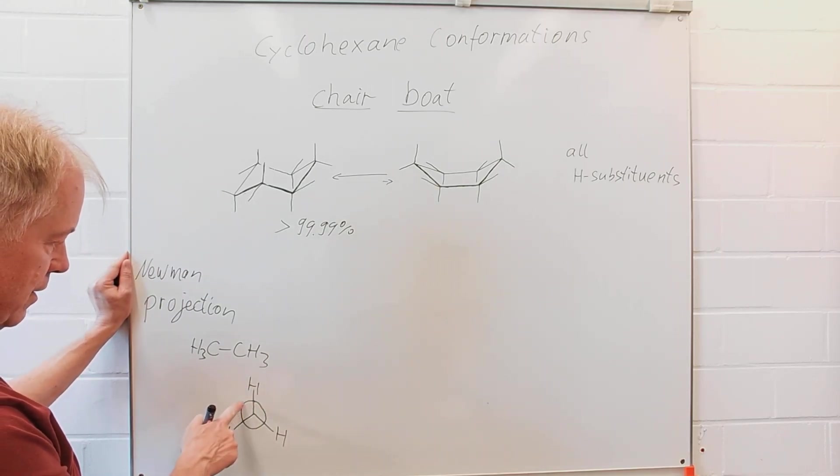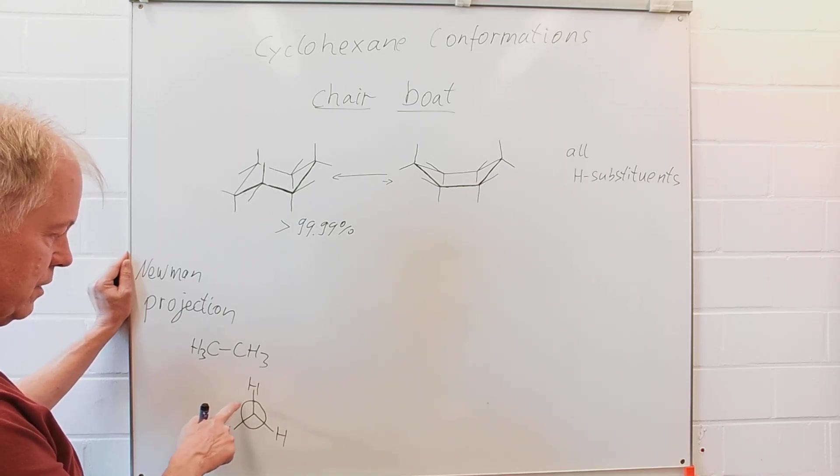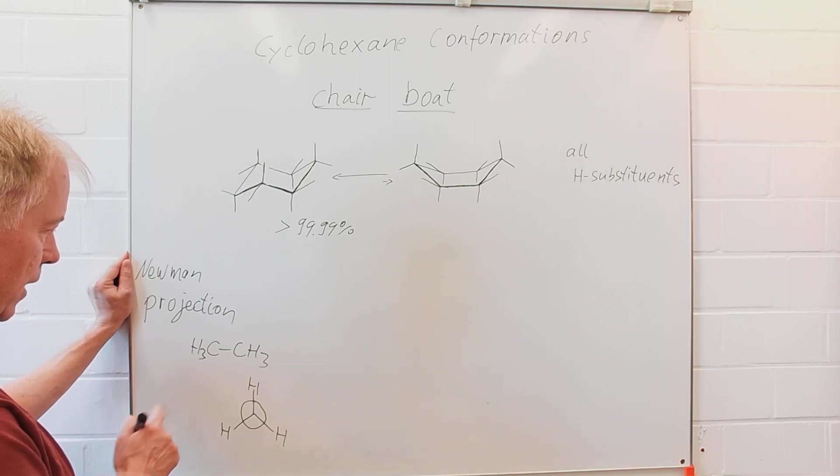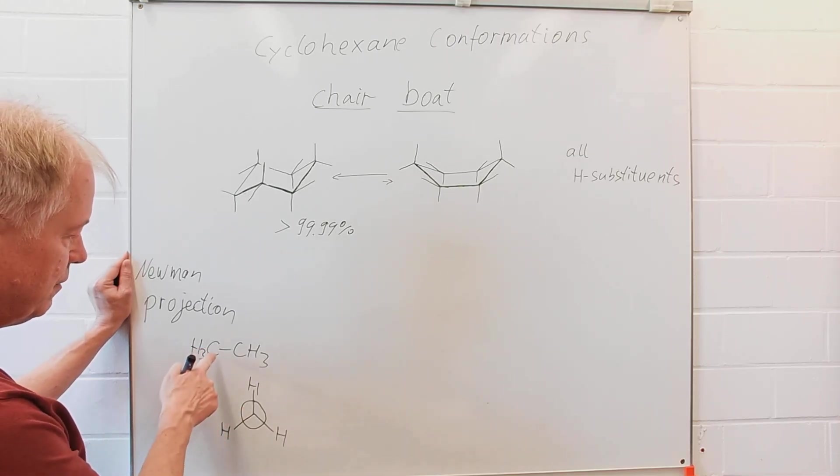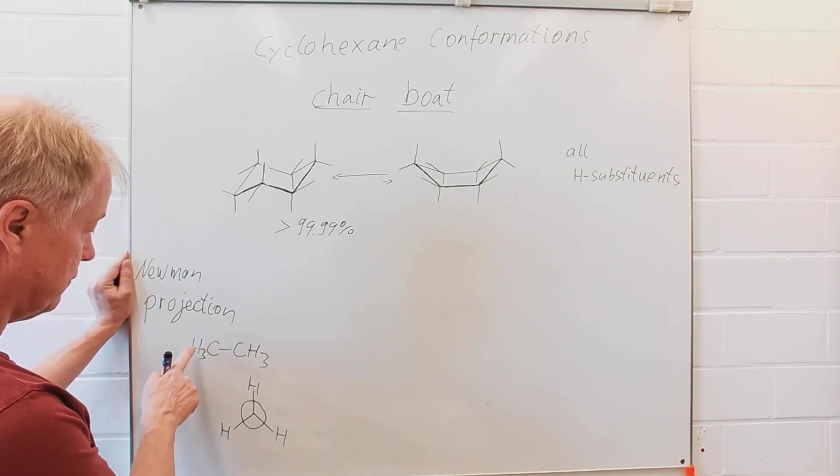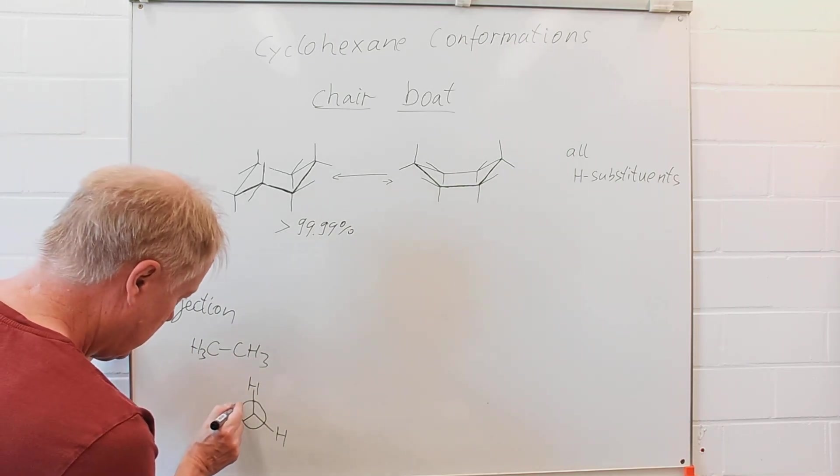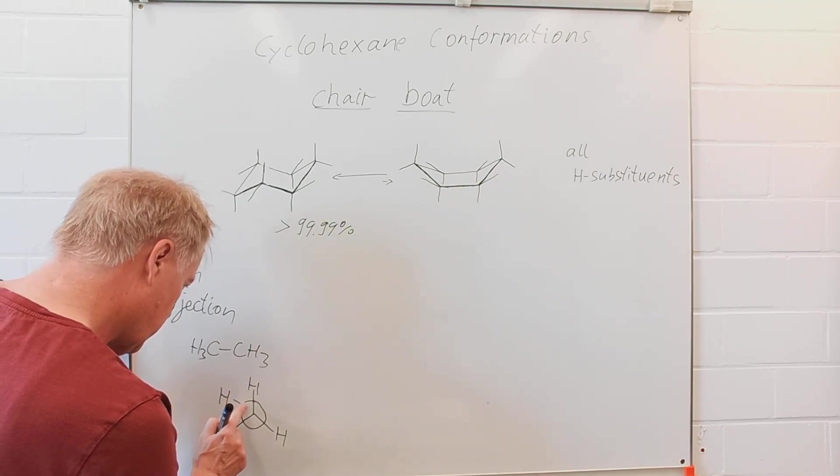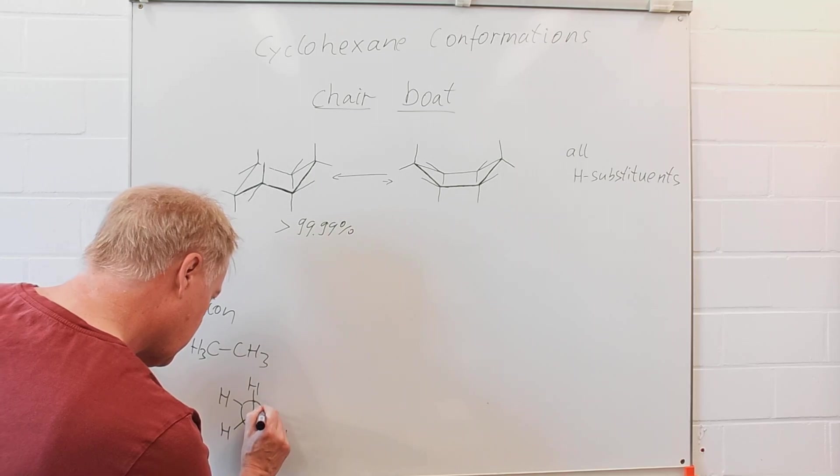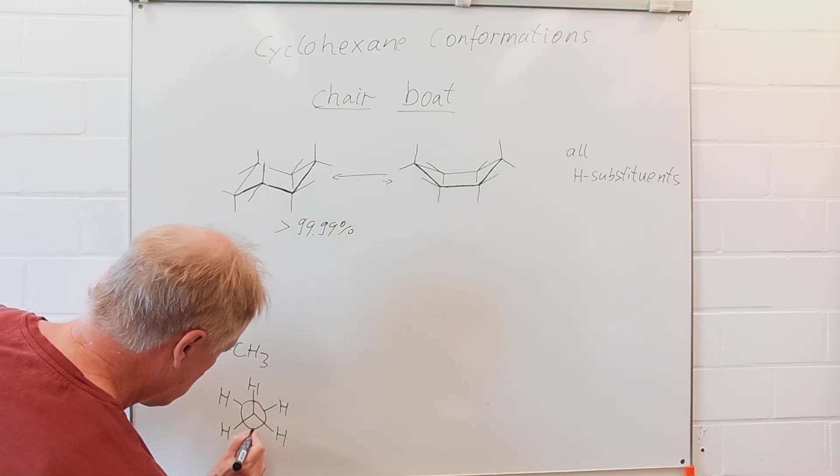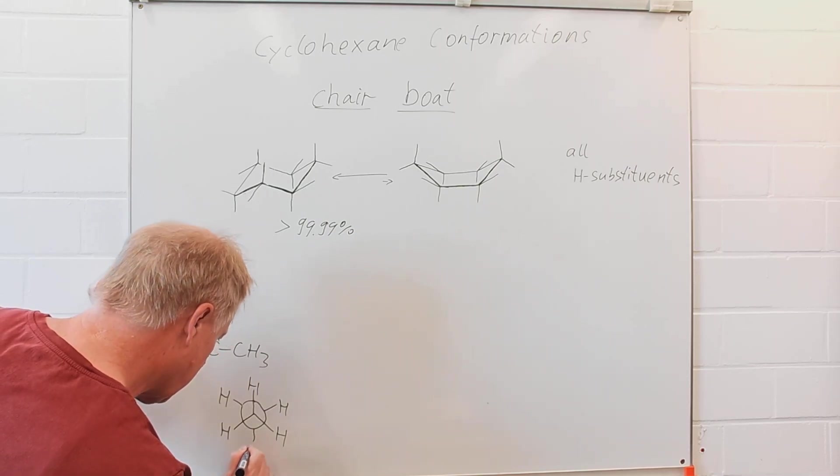So, the second carbon is behind the first one. We don't see that second carbon, but we could see then in that projection the other three hydrogens. And those three hydrogens should be drawn like that.